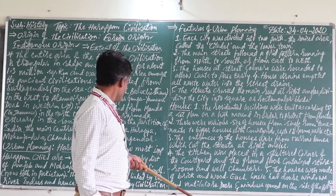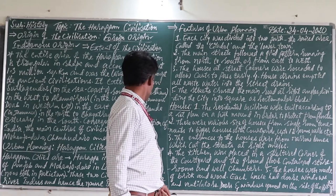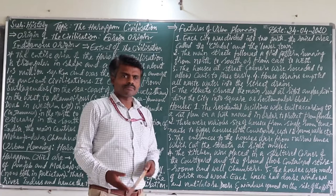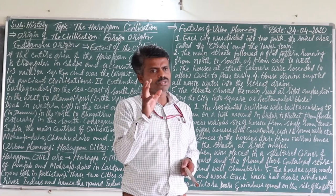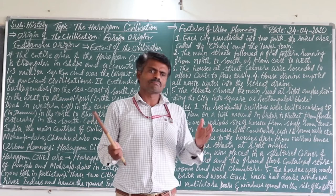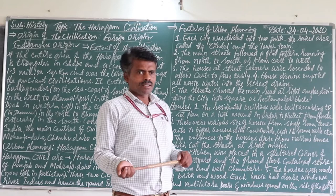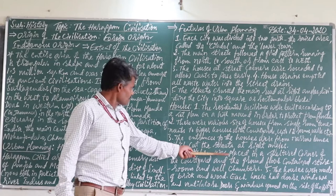This is one area where we need to appreciate the Harappan people. The fourth characteristic: the kitchen was placed in a sheltered corner of the courtyard, and the ground floor contained storerooms and well chambers. Today if we construct a home, we follow vastu — consulting astrologers or vastu experts. But those days there was no vastu. Yet the kitchen was placed in a sheltered corner of the courtyard.